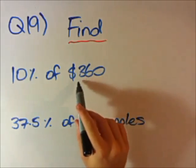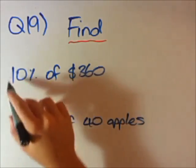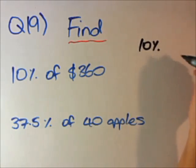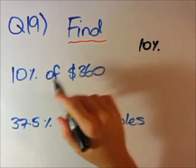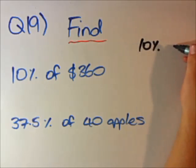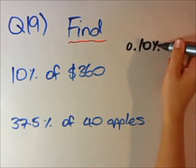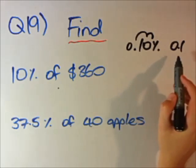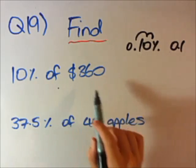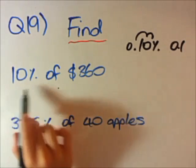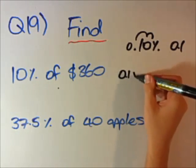We have $360 and want to find 10% of it. What is 10% in decimal form? We divide by 100 — the opposite of converting to a percentage — giving 0.1, by moving the decimal two places. So 10% of a value means 0.1 times that value. That means 10% of $360 is the same as 0.1 times $360.